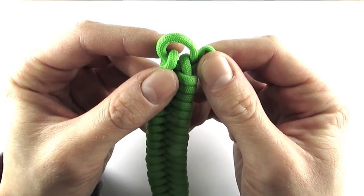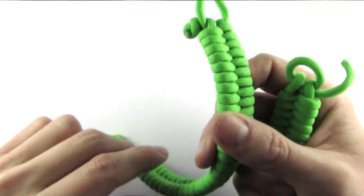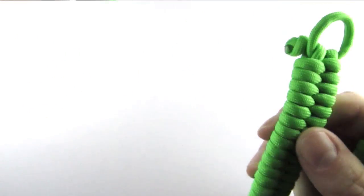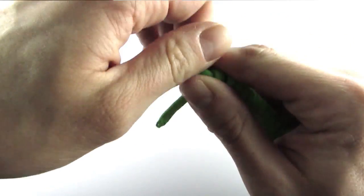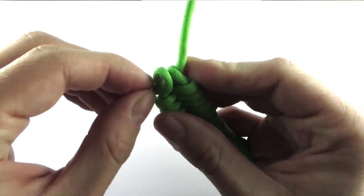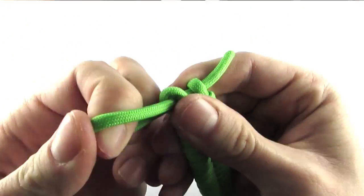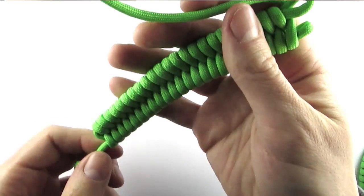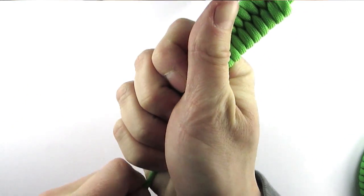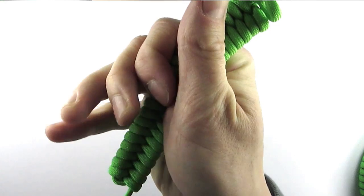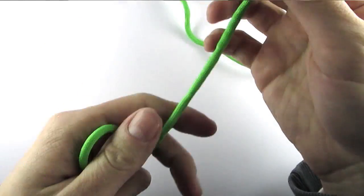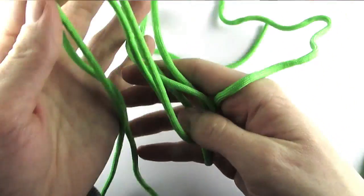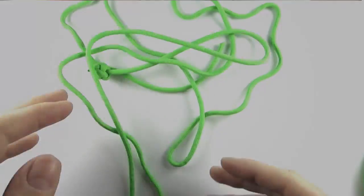This is the half hitch I would make. And to unravel it, simply undo the loop by pulling it out, and then pull on your stopper knot and it's going to undo itself, and you have your paracord ready to go.